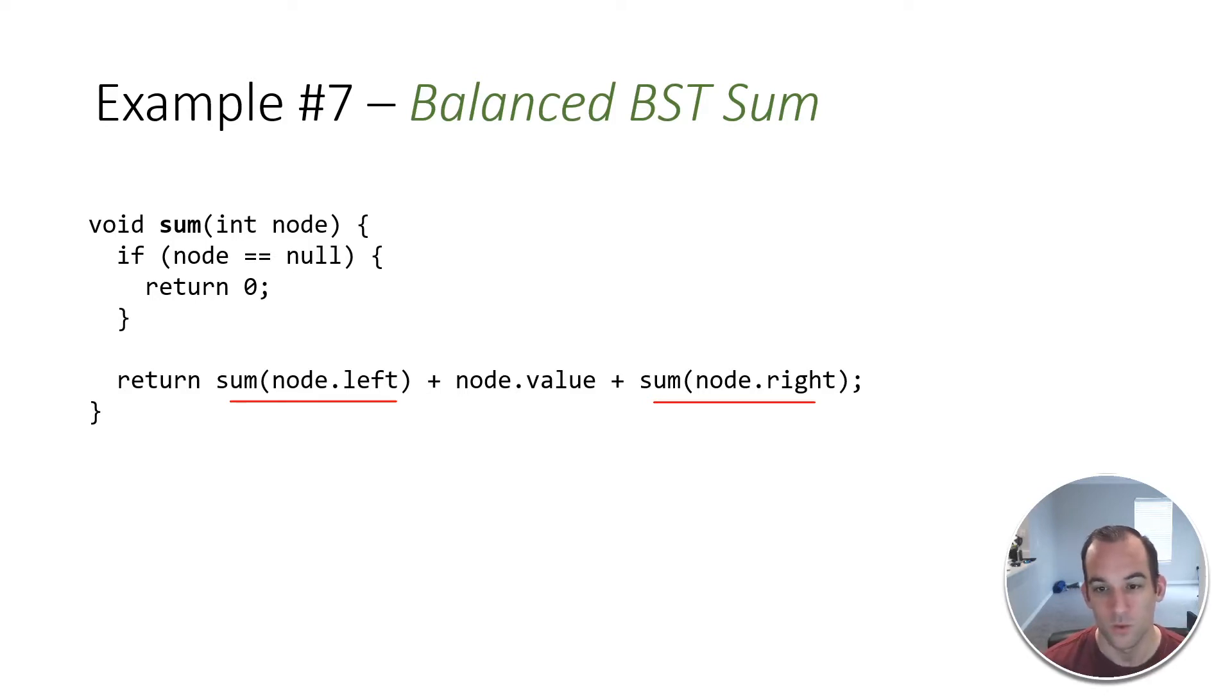So why? Well, we're returning the sum of the left subtree plus the current node's value plus its right subtree. And we're going to recursively go down those subtrees. So what this means is we're going to be hitting every node in the tree.